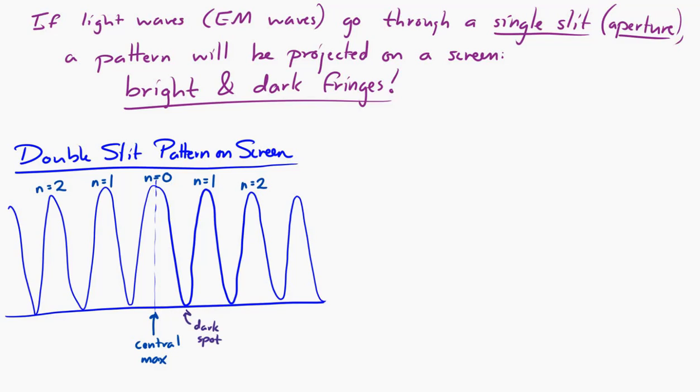And we had an expression for the distance between the bright spots. That was s equals lambda D over d, where capital D is the distance from slits to screen, and small d is the distance between the two slits.